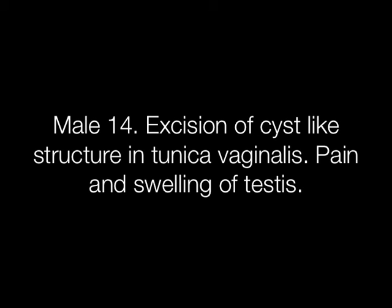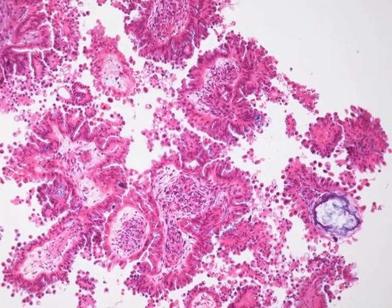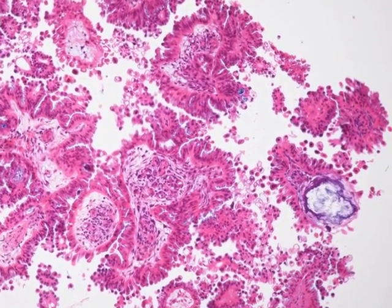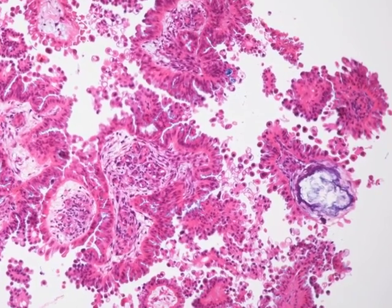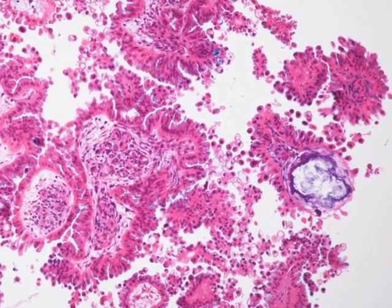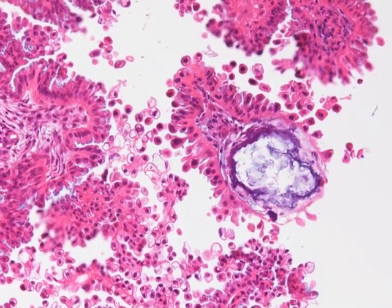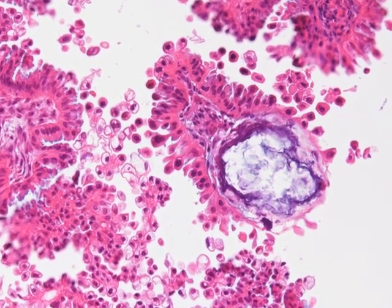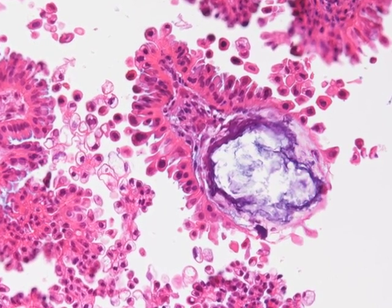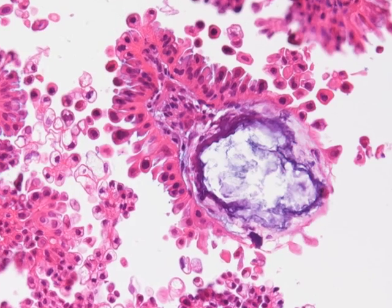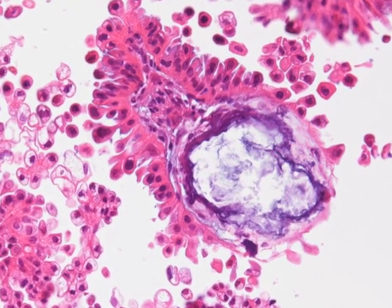Case number 12: a 14 year old male complaining of pain and swelling of his testis. A cyst-like structure was excised from the tunica vaginalis. Part of the specimen showed a papillary excrescence, and this is the H&E of the papillary area. On higher power we can see something that looks like a psammoma body. What is this lesion and is it benign or malignant?